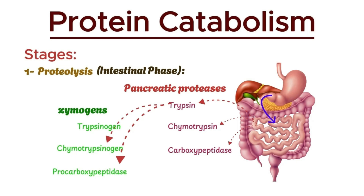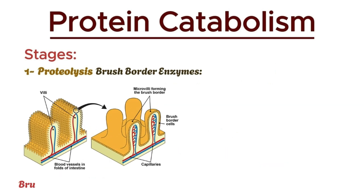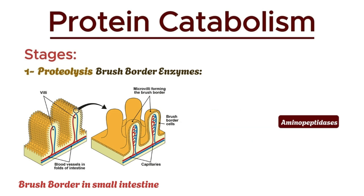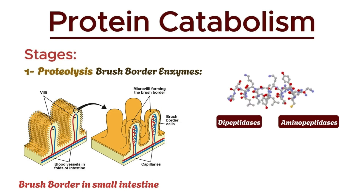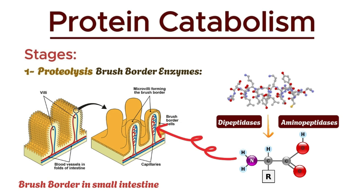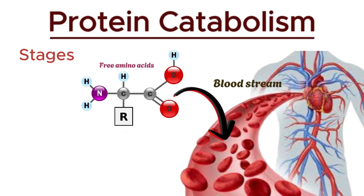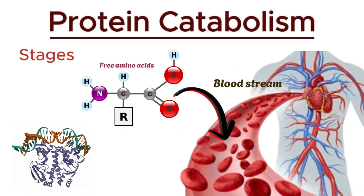The final breakdown into free amino acids occurs at the brush border of the small intestine. Peptidases, including aminopeptidases and dipeptidases, further cleave peptides into individual amino acids. These amino acids are then absorbed into the bloodstream for use by the body. After proteolysis, free amino acids are released into the bloodstream, originating from the complex proteins in the food we eat.